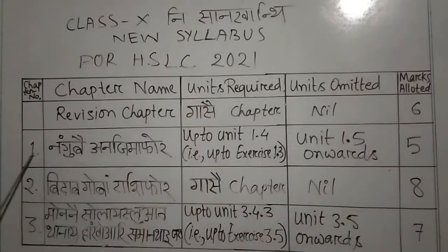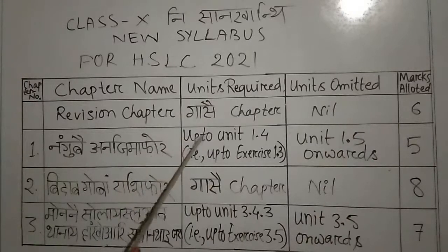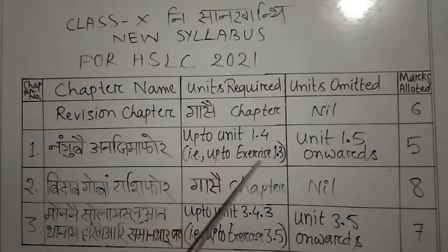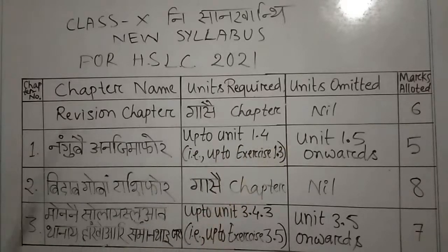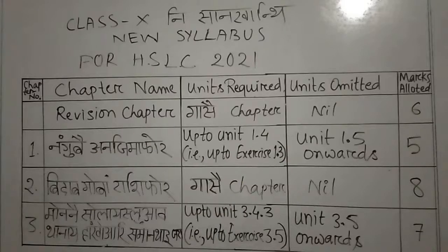The next topic is chapter C number. We have to do up to unit 1.4, that is up to exercise 1.3. If you have to do 1.4, you need to do 1.4. If you have to do 8 textbooks, you need to do 1.1 and 1.2.